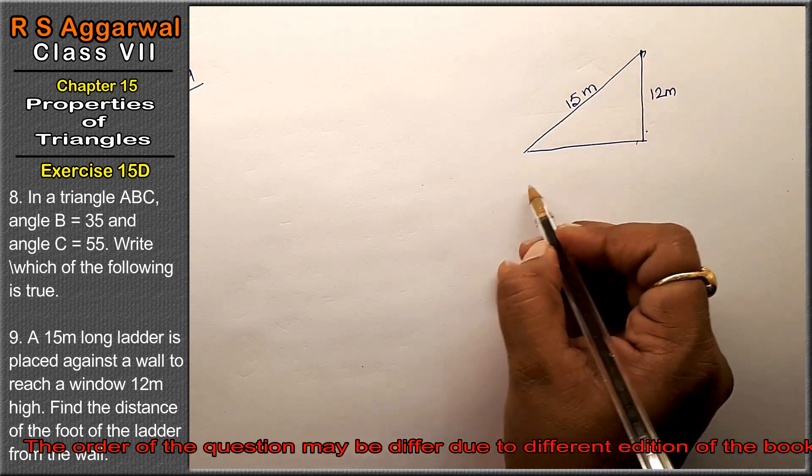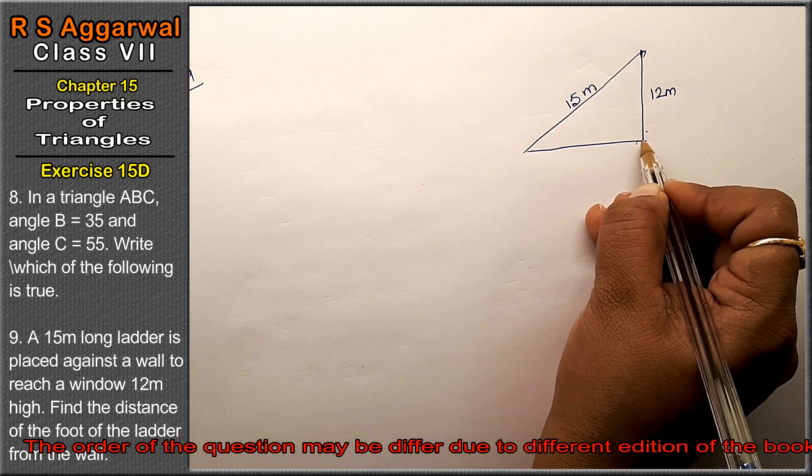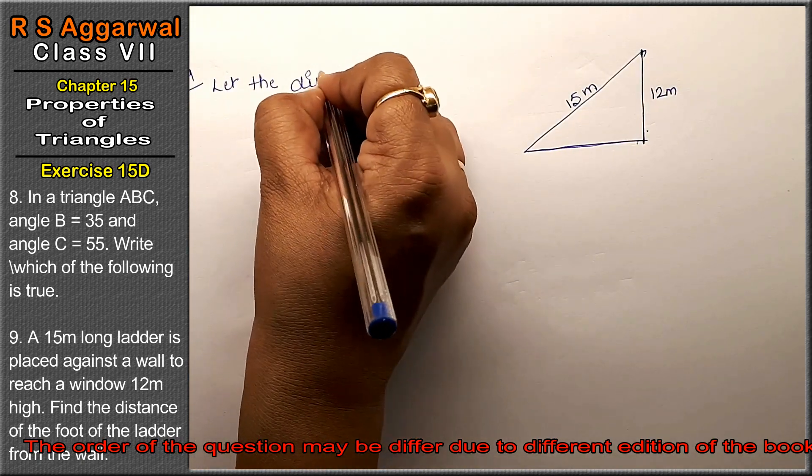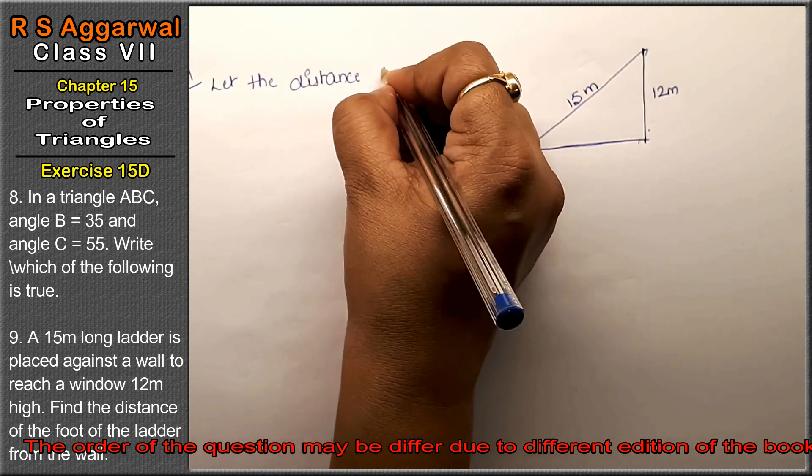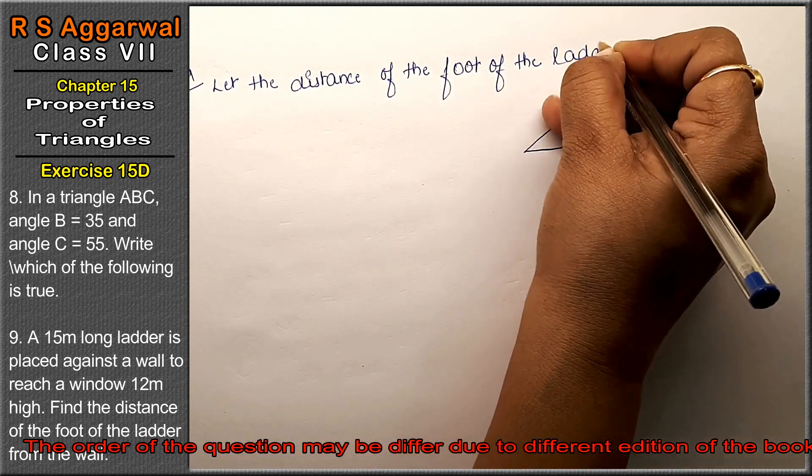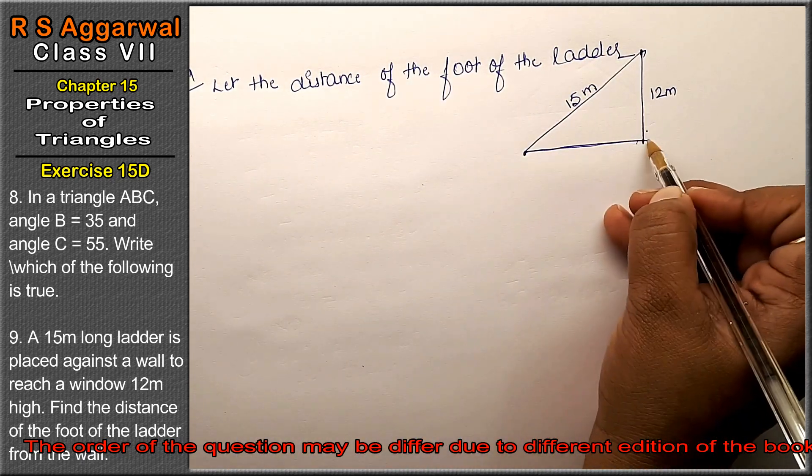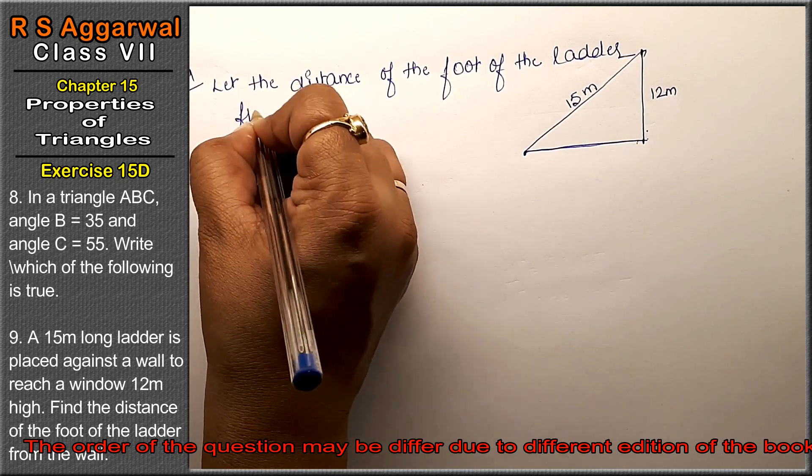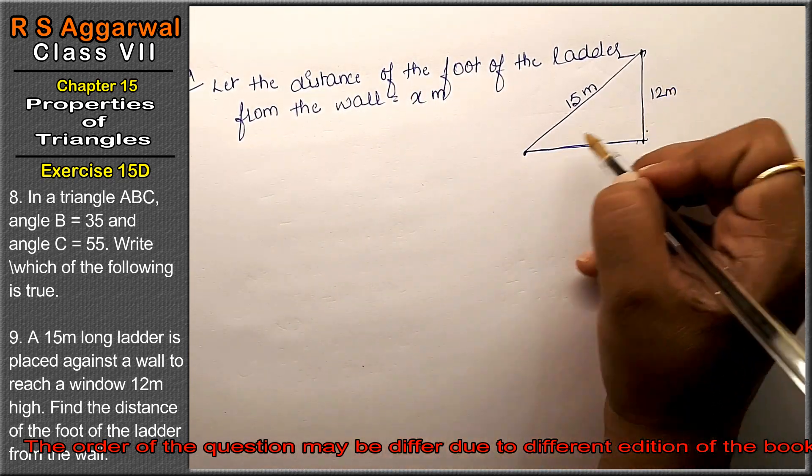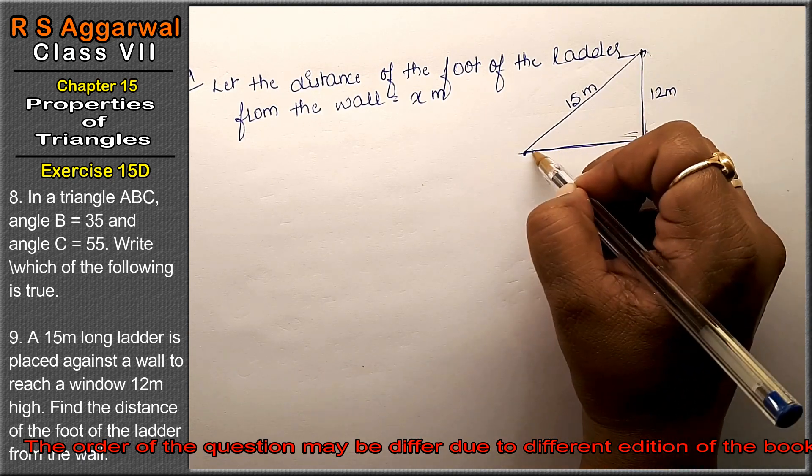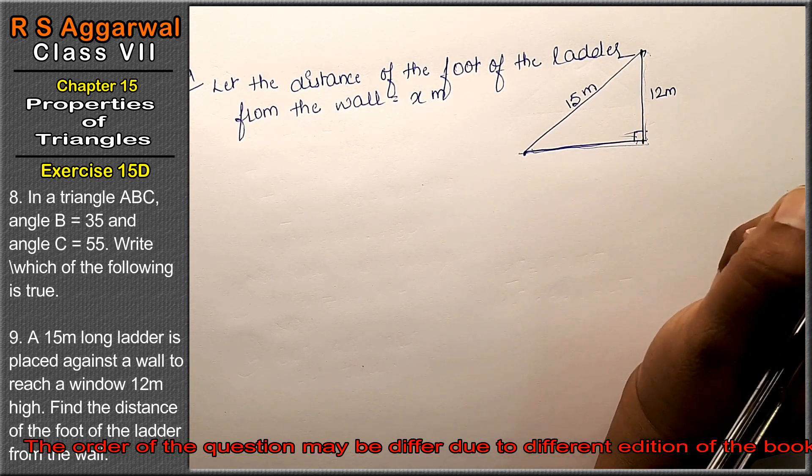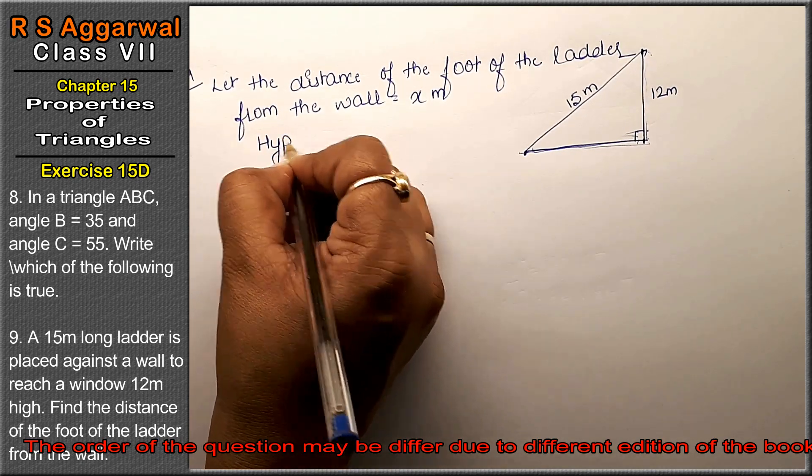Find the distance of the foot of the ladder from the wall. Let the distance of the foot of the ladder from the wall be x meters. Now you can see this is our right triangle. Why is it a right triangle? This is the foot and it's a straight wall, so this is a 90 degree angle. Which theorem will we apply? Pythagorean theorem.